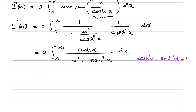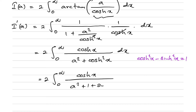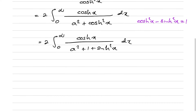Substituting, we get two times the integral from zero to infinity of cosh(x) over (a² + 1 + sinh²(x)) dx. We recognize that the derivative of sinh(x) is cosh(x), so we can write this as an integral in terms of d(sinh(x)).